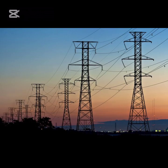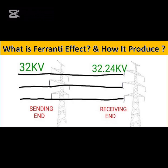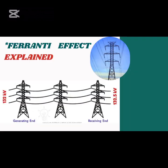Typically, voltage decreases along transmission lines due to losses, with the sending end voltage being higher than the receiving end. However, the Ferranti effect defies this expectation, causing the receiving end voltage to rise above the sending end voltage under specific conditions, leading to a surprising reversal of the expected voltage drop. In this video we will explore: one, what is the Ferranti effect; two, what causes it; three, how to reduce it; and lastly, advantages and disadvantages of the Ferranti effect.